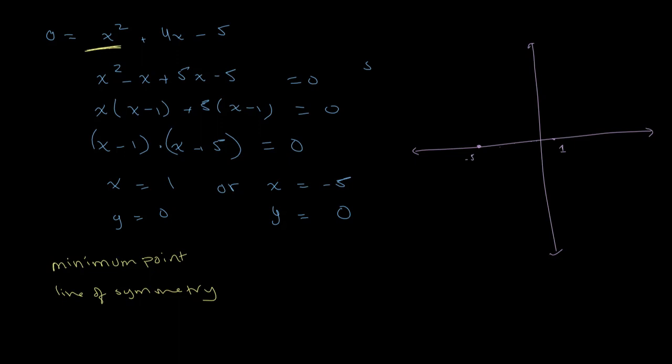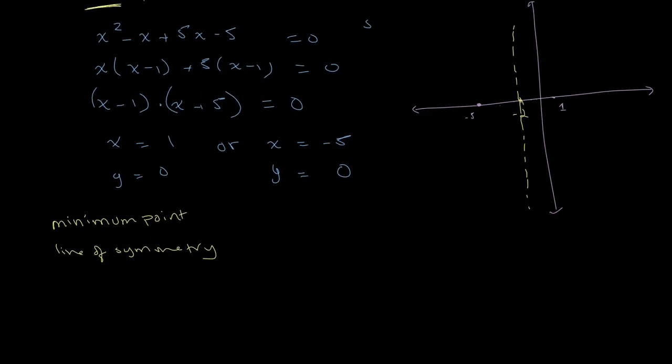And this will be at, let's see, these are six points apart. And in between is 3, so this is minus 2. That's right in between them. And our line of symmetry runs directly through this. So our line of symmetry is x equals negative 2.